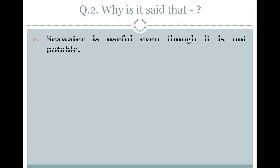Now let us move towards the third question: is sea water useful even though it is not potable? The word potable means the water which can be drunk is called potable water. We cannot drink sea water, so why is it said to be useful?